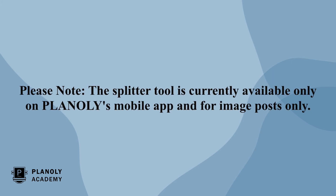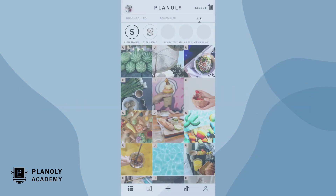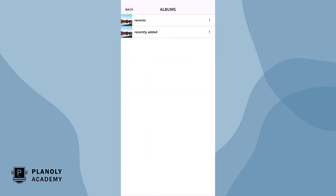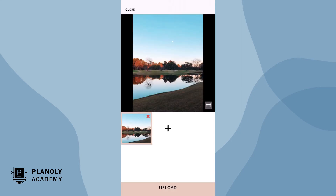Please note the Splitter Tool is currently available only on Planily's mobile app and for image posts only. To access the Splitter Tool, first upload an image to your grid. Make sure to choose an image that has a high resolution — if it has a low resolution, your image may appear pixelated once you split it, and we want to avoid that.